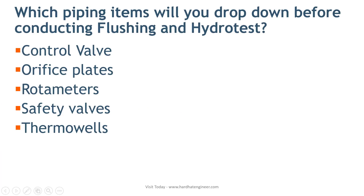Which piping items will you drop before conducting flushing and hydrotest? When you perform hydrotest or line flushing, debris such as pipe rust, welding slag, and sand will move and may get stuck inside instruments and valves, creating problems with their function. Any item that may be impacted by this type of debris must be removed while performing flushing and hydrotest. Items like control valves, orifice plates, rotameters, safety valves, and thermal valves are dropped or replaced with temporary pipe spools before hydrotest.